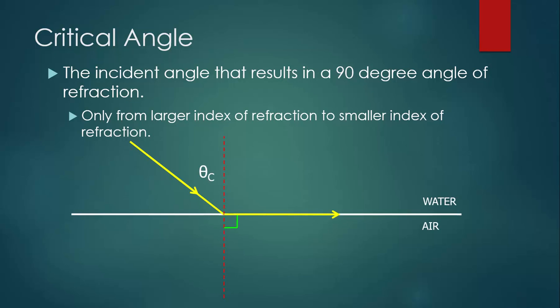Here's a diagram to represent what I mean. The critical angle is an angle of incidence represented by theta c, and the refracted angle is exactly 90 degrees.